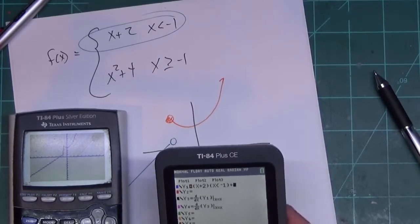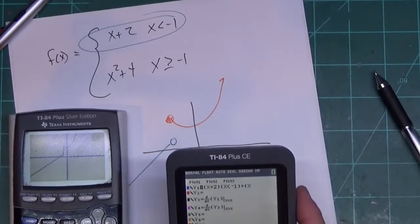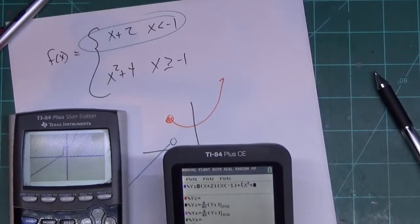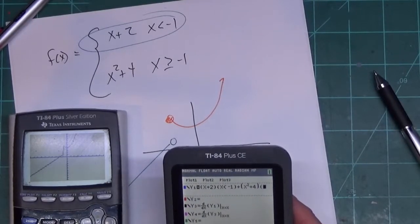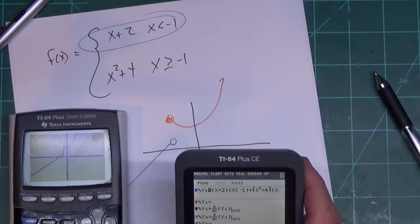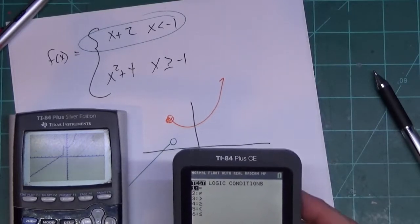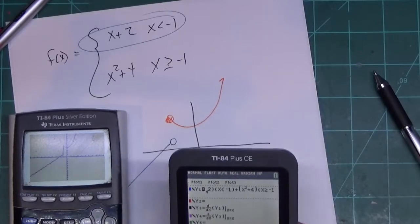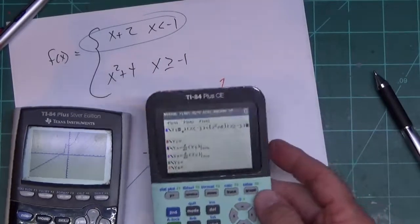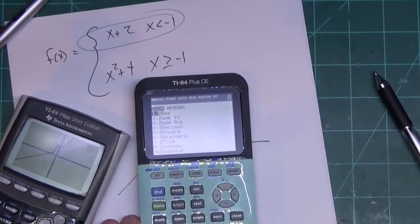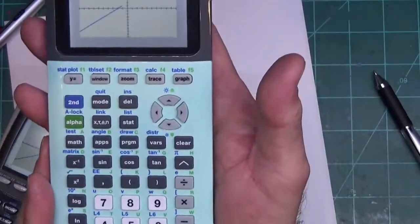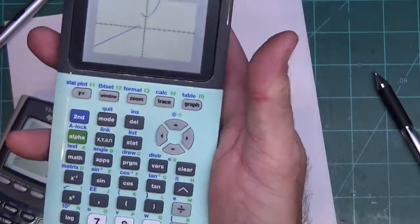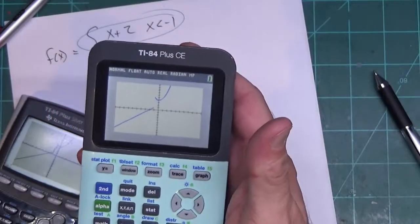Oh, not minus, plus. Parenthesis, we're doing X squared plus 4, and then we're doing X second test, greater than or equal to negative 1, close parenthesis. And then if I press my zoom 6 on this one.